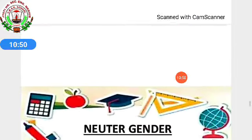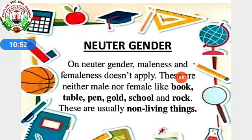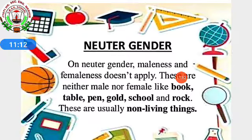Last one: neuter gender. For neuter gender, maleness or femaleness does not apply — these are neither male nor female. Like book, table, pen, gold, school, and rock. These are usually non-living things. Neuter gender nouns refer to things without life — non-living things like pen, pencil, chair, table. All these come under neuter gender; they are neither male nor female.